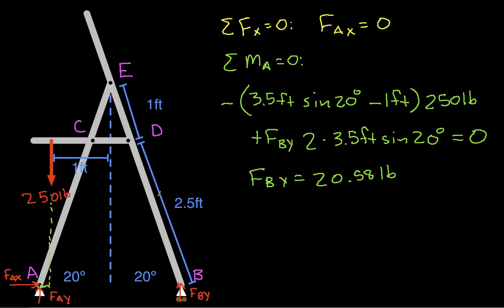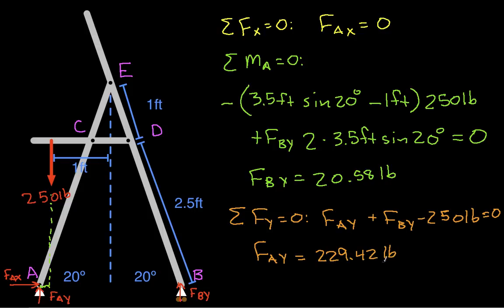We can also do then the sum of the forces in the Y direction is equal to zero. In the Y direction, we have FAY plus FBY minus our 250 pound load and that's equal to zero. And from this, we can solve for FAY and that's equal to 229.42 pounds.